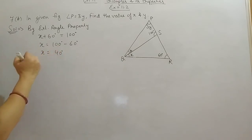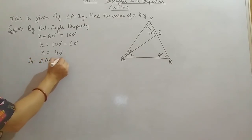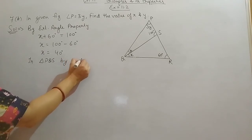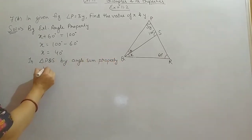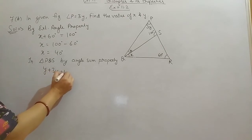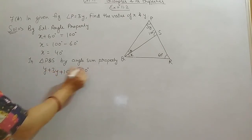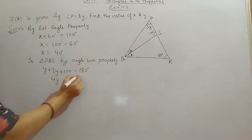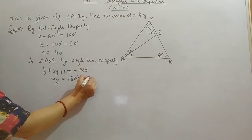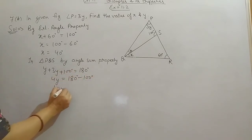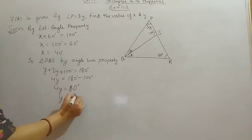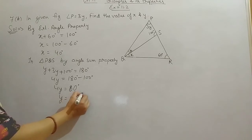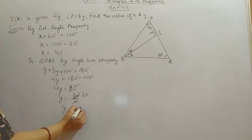Now in triangle PQS, we use angle sum property. By angle sum property, Y plus 3Y plus 100 equals 180 degrees. Y plus 3Y becomes 4Y, and shifting 100 to the other side gives 4Y equals 180 minus 100 equals 80 degrees. So Y equals 80 divided by 4, which is 20 degrees.